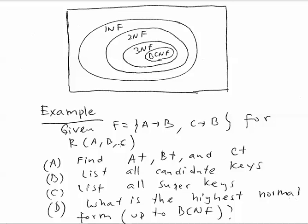This theory is based on the assumption that we know the functional dependencies for a table. In this example we have a set of functional dependencies — two functional dependencies applied for table R, which is A and C. The main question is: what is the highest normal form that R is in — 1NF, 2NF, 3NF, or BCNF? We can see this as a multiple choice question with four possible answers. Let's compute A+, B+, C+ because that helps us find the candidate keys.